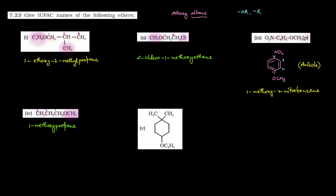Fifth part thoda dhyan se dekhenge. Yahan diya hai ek ring — six-member ring. Isme ek position par hain do methyl groups (CH3, CH3) aur ek position par hai OC2H5 — ethoxy group. Ab agar yahan numbering dene ki baat karein toh ek first position par aur ek fourth position par aayega. Agar upar se numbering karein — first carbon, second, third, fourth. Yahan dekhenge: jo OC2H5 hai woh ethoxy aur CH3 methyl hai, aur unka priority same hota hai.